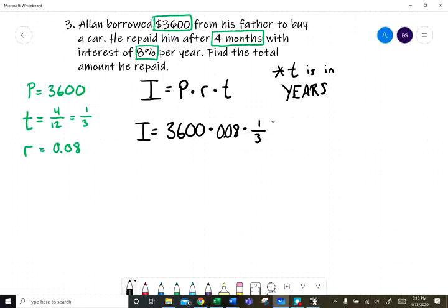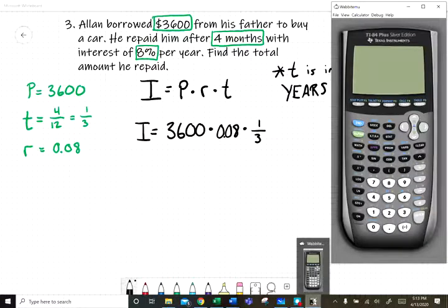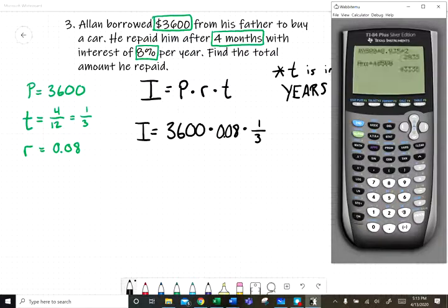When we're typing this into the calculator, it's 3600 × 0.08 × 1 ÷ 3. Let's pull up the calculator. So that's 3600 times 0.08 times the fraction 1/3, so times 1 divided by 3. $96. It shouldn't be much interest because it's only for part of a year, only for four months.